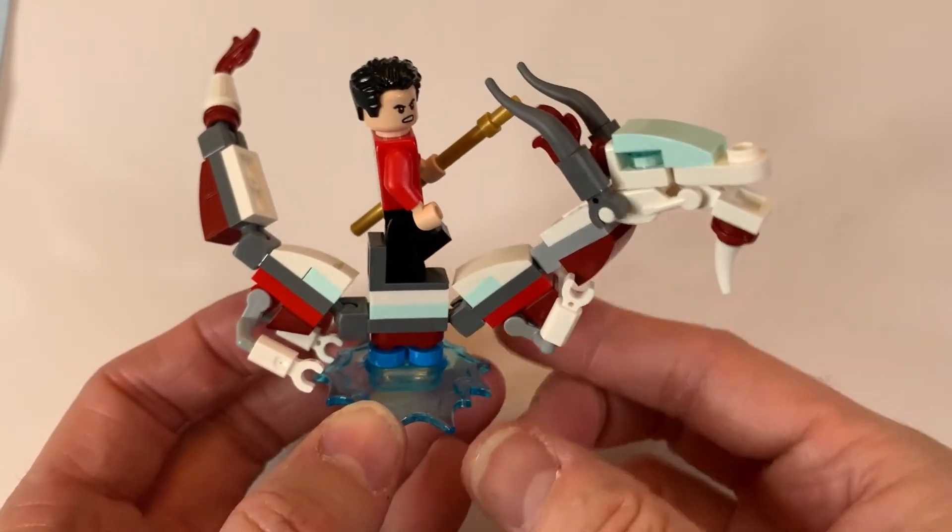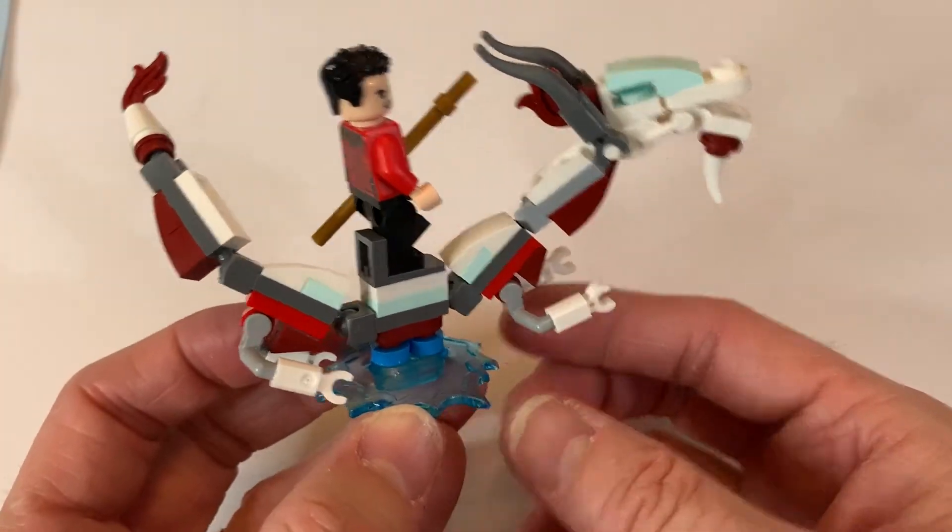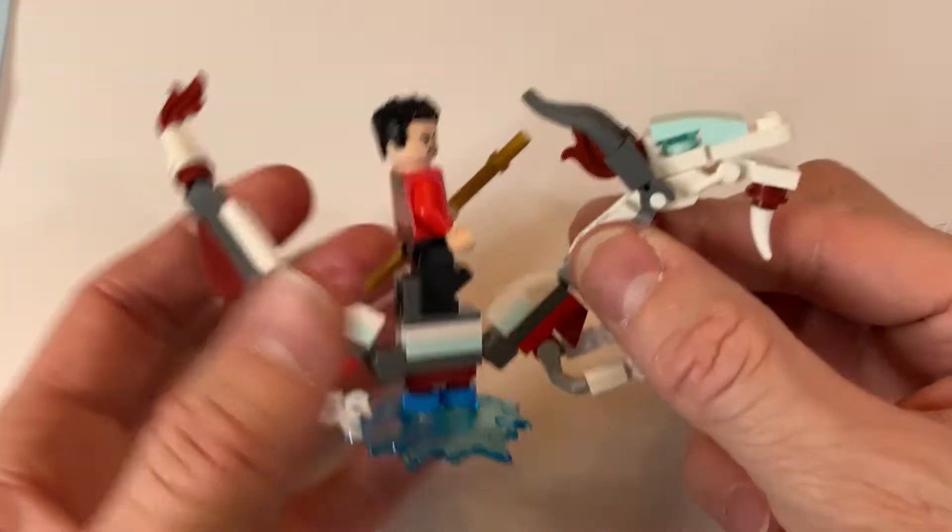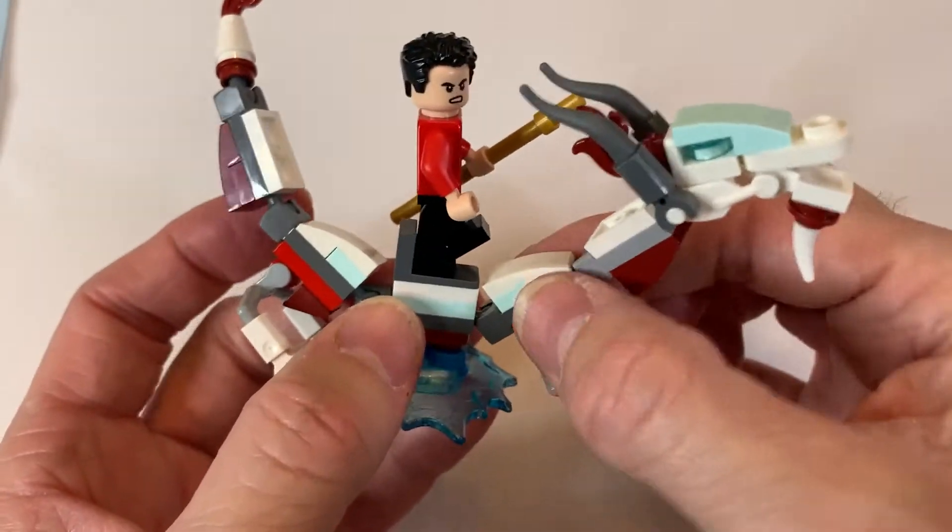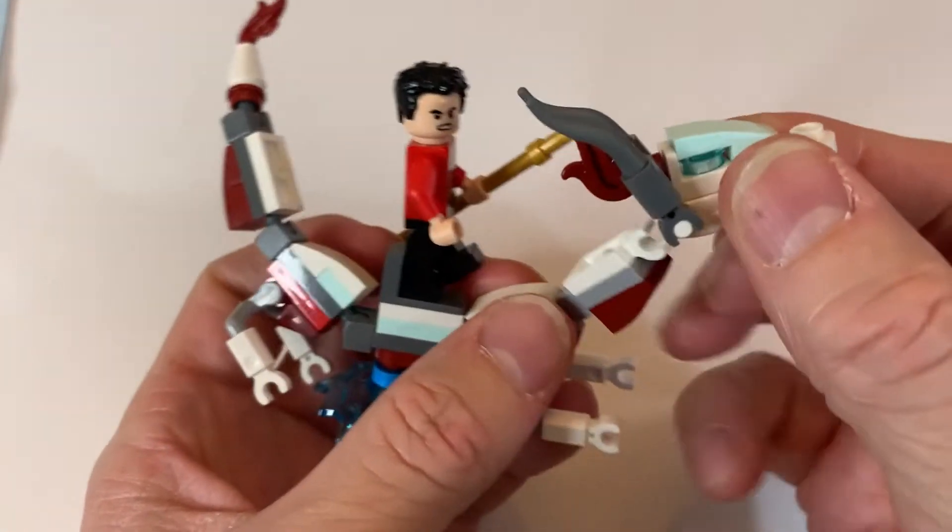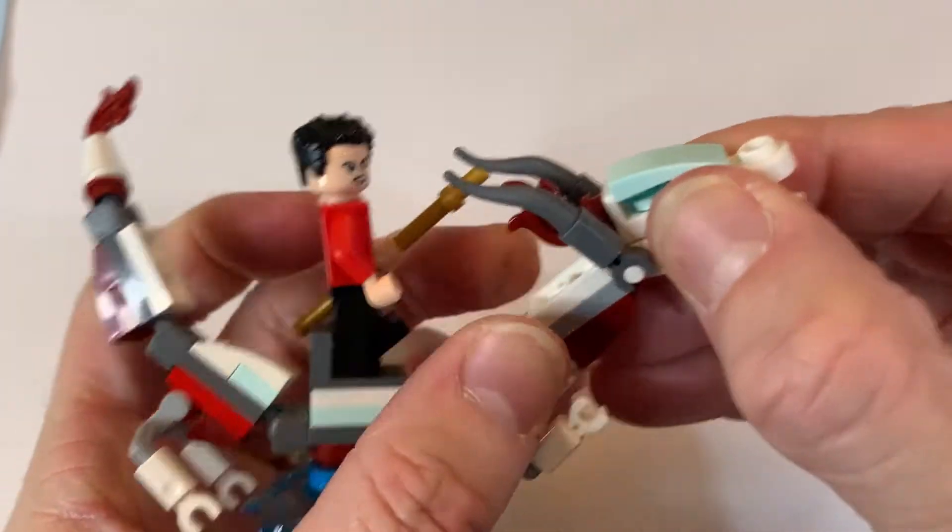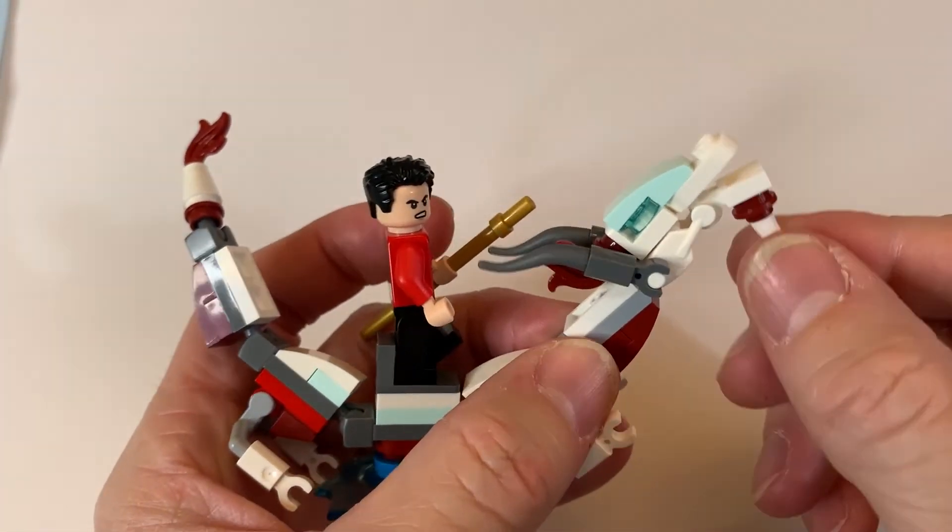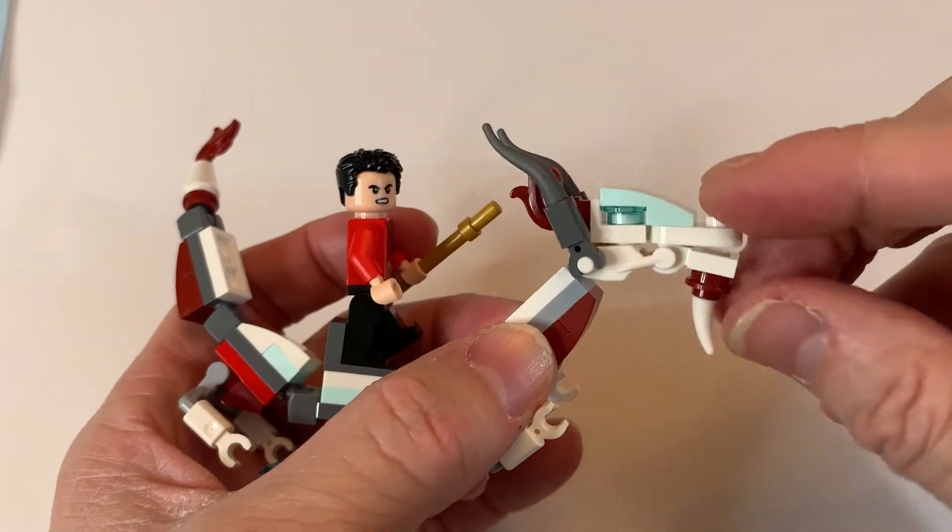There you have it. Look at this. Isn't this a great set? It's fully articulated. Each of the joints can move or come off. There we go. Even the mouth goes up and down.